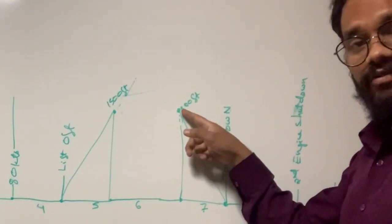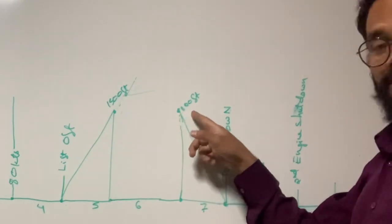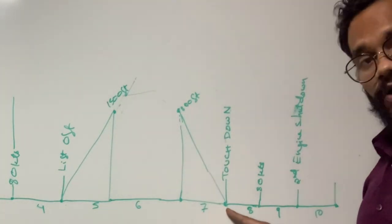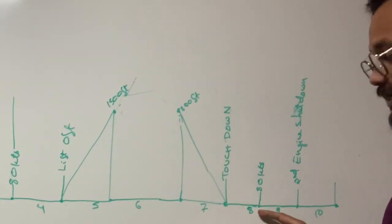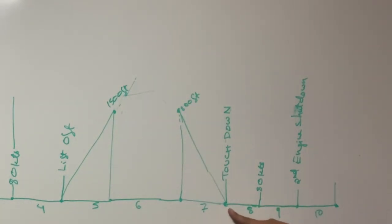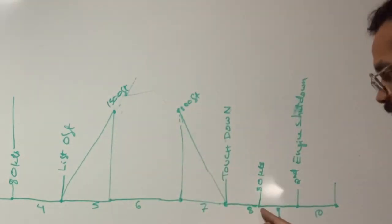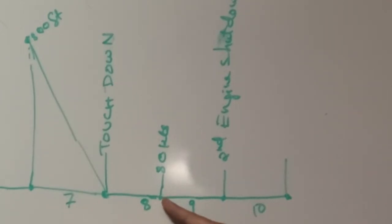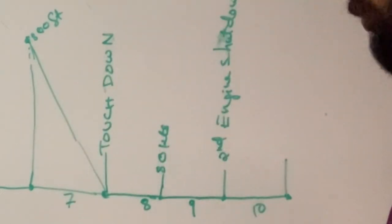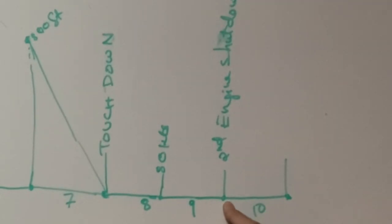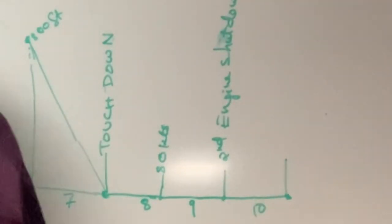Phase 7 starts at 800 feet on descent. Phase 8 starts at touchdown and continues till the aircraft speed goes below 80 knots. At 80 knots and below, phase 9 starts — you decelerate, stop the aircraft, taxi and come back to the bay. Phase 9 ends when you do the second engine shutdown, or the last engine shutdown, and phase 10 starts. You are on the ground, parked, and the aircraft is electrically powered.